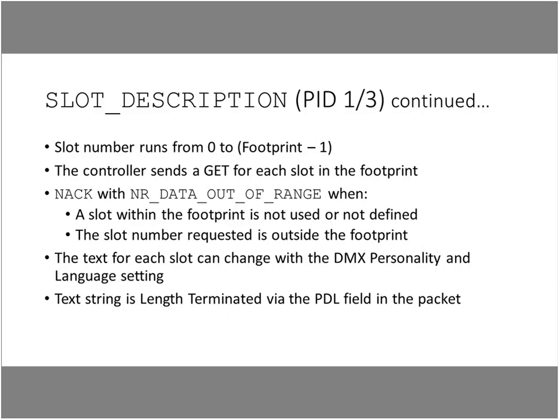The slot number in the response runs from zero up to the footprint minus one. So if a device takes three slots for an LED fixture, the slot numbers will be zero, one, and two. Importantly, this numbering is relative to the fixture's footprint — it is not the slot number to which the fixture is patched. This data does not change as we repatch the fixture. Whether it's patched to DMX starting address one or 150, if it takes three slots, the range is zero to two.